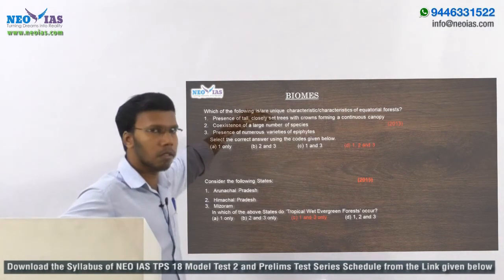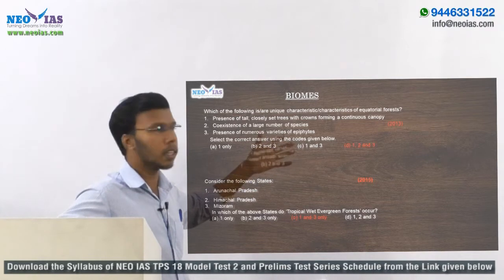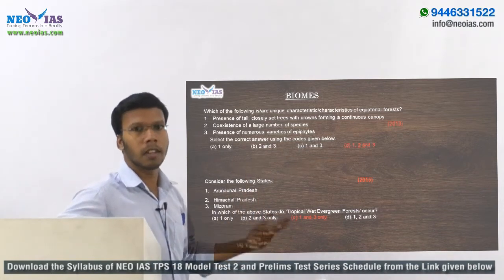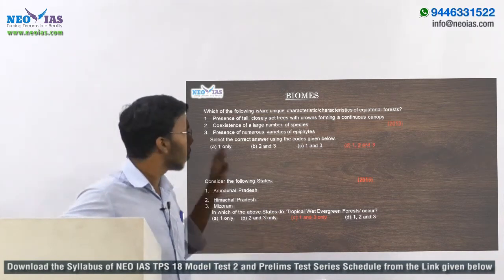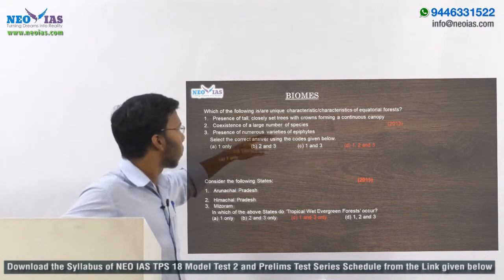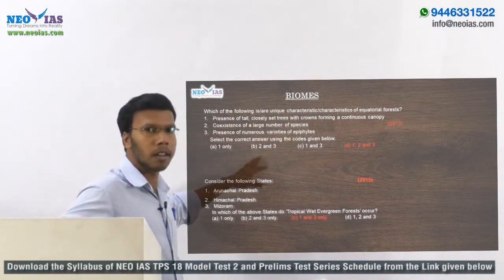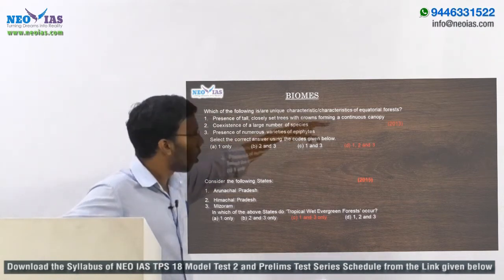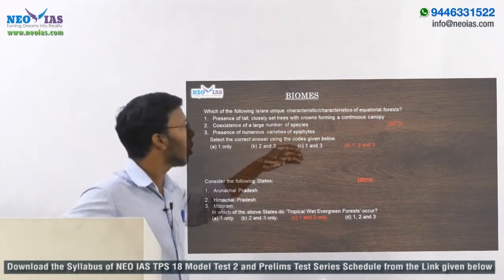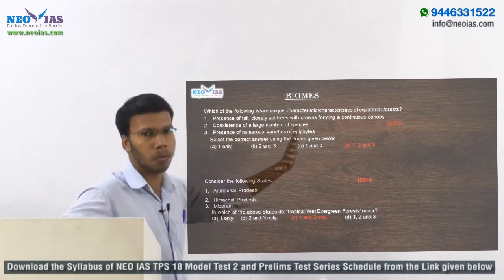Another important topic is biomes. There are different types: forest biome, grassland biome, desert biome, and tundra. Within forests, there are evergreen forests, desert forests, mangrove forests, and thorn forests. You should study the features of each biome. Questions may ask about the characteristics of equatorial forest, deciduous forest, savanna biome, or tundra vegetation — giving statements and asking you to identify the correct biome.